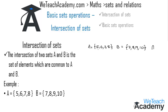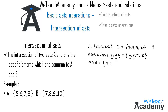Now let us find the intersection of sets A and B. A intersection B equals {5,6,7,8} ∩ {7,8,9,10}. We find only two common elements, 7 and 8, in both sets. In set-builder form, this can be written as: x such that x belongs to A and x belongs to B.